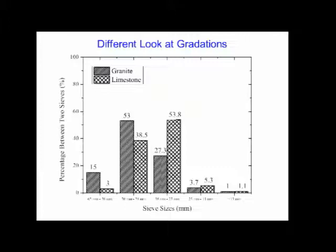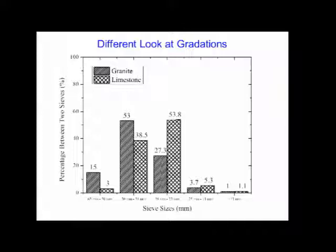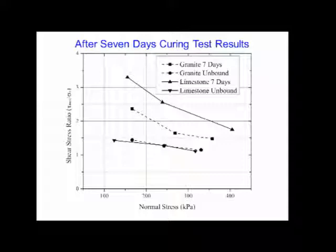Looking at the gradations from a different perspective — these are percent retained between different sizes — granite particles are larger than limestone particles. In a sample, there are fewer granite particles, creating fewer contact points and fewer chemical bonds. In limestone, the reverse: more particles, more contact points, more chemical bonds, causing the increase in shear strength we observed. That is why the chemically bonded limestone outperformed bonded granite.